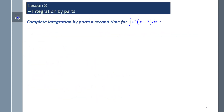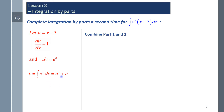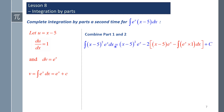For the second integration by parts, let u equal (x minus 5), so du/dx equals 1, and dv/dx equals eˣ, hence v equals eˣ plus c. Combining parts 1 and 2: the result from the first stage is shown in black, and the second integration by parts result is shown in red. Substituting in the terms for u, v, and du/dx, and noting that the integral of eˣ is simply eˣ.